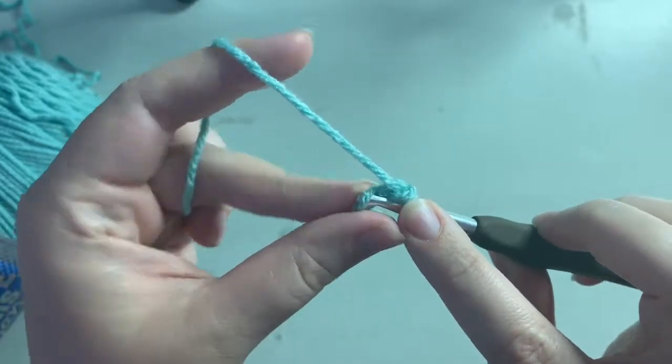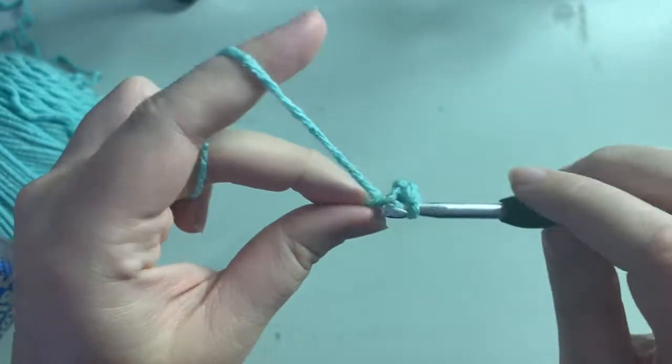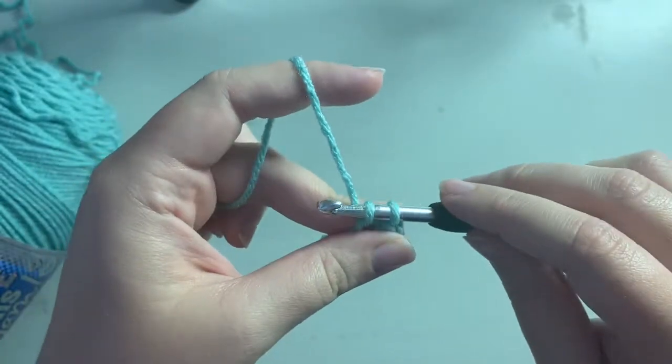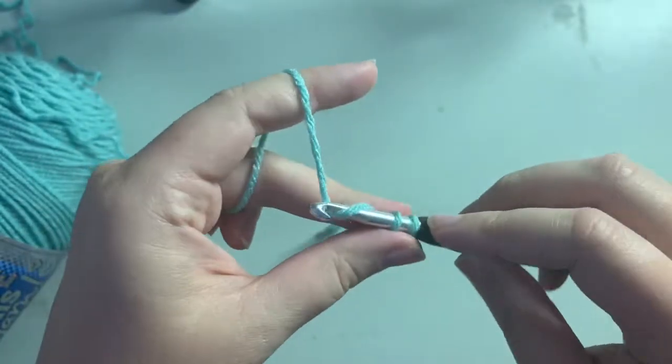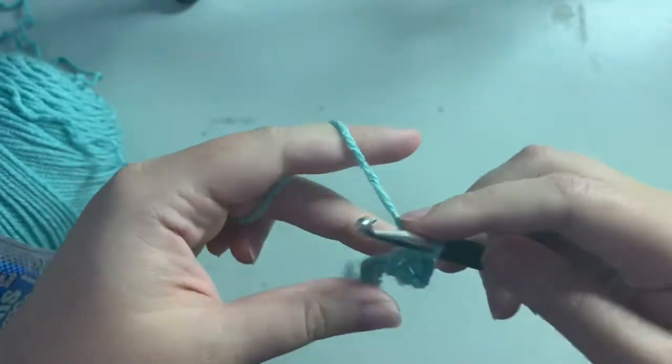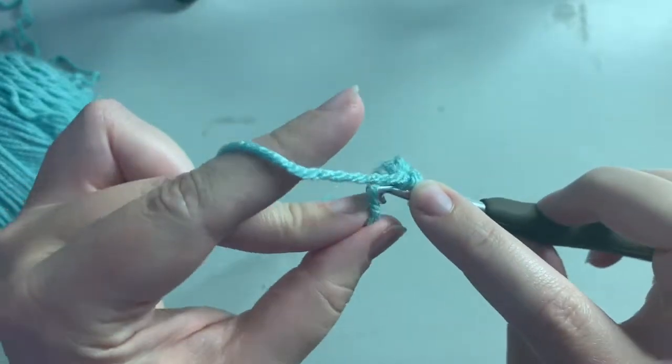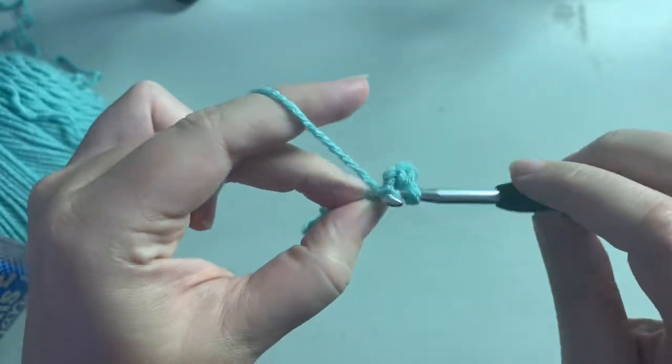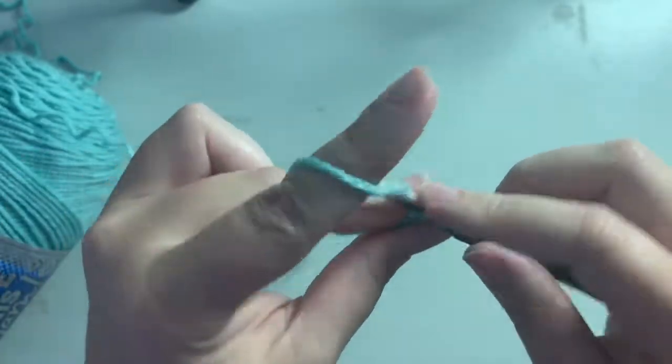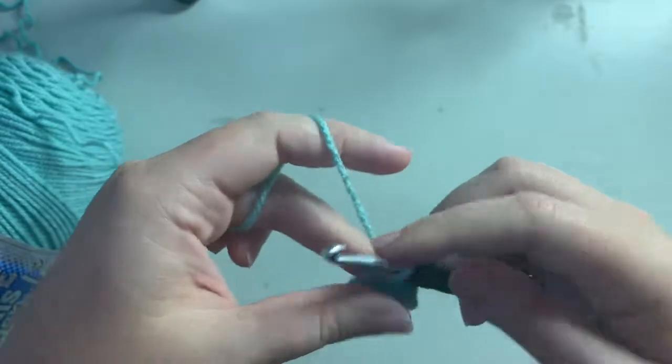So again we'll go into the next chain, yarn over, pull up a loop, two loops on our hook, yarn over, pull through both. Go into our next chain, yarn over, pull up a loop, two loops, yarn over, pull through two.